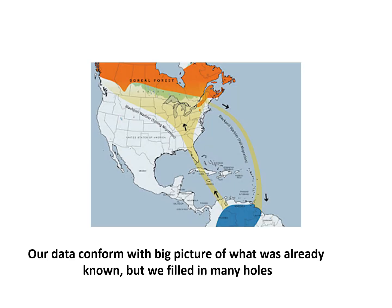This map shows what was known about migration routes for a long time. In the fall, birds leave the breeding range, go towards the northern part of the Atlantic coast, and then take off over ocean to reach their wintering grounds in South America.